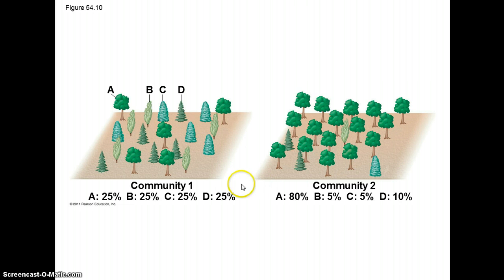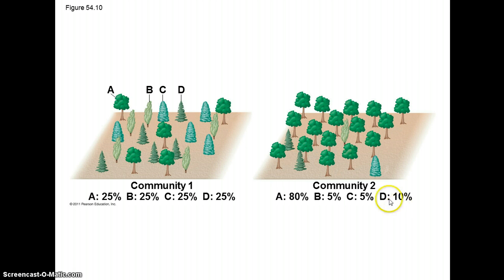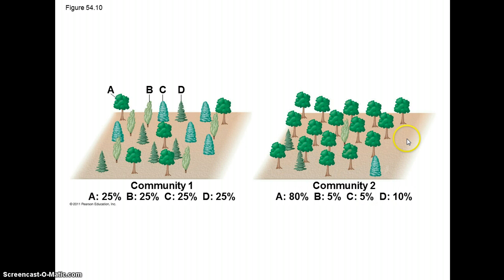Take a look here. We have two communities. They each have four species of trees, so the species richness is the same, but you can see the proportions are different. This one has an equal proportion of each of the four species, where this one is dominated by species A — eighty percent of the trees are that species. So, while the richness is the same, this community in one sense is more diverse, while this one is not quite as diverse because it's dominated by one species.